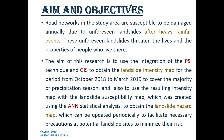The aim of this research is to use the integration of the PSI technique and GIS to obtain the landslide intensity map during a precipitation season, and also to use this intensity map with the landslide susceptibility map created from the artificial neural networks analysis to obtain the landslide hazard map as a final result.